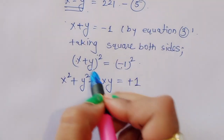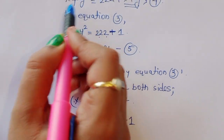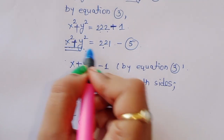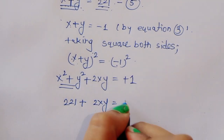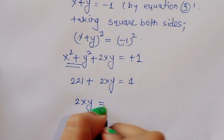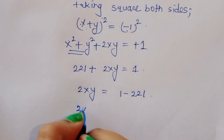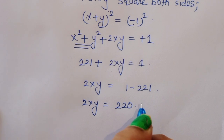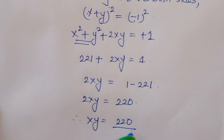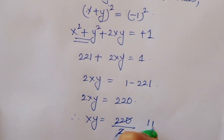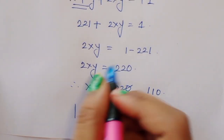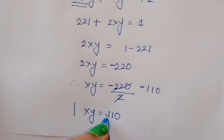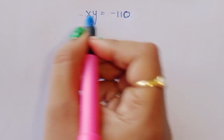We know the value of x squared plus y squared is 221 from equation 5. Substituting: 221 plus 2xy equals 1. So 2xy equals 1 minus 221, which gives 2xy equals minus 220. Therefore, xy equals minus 220 divided by 2, which is minus 110. So the value of xy is minus 110.